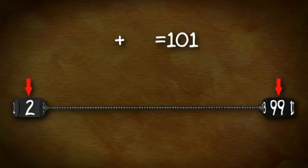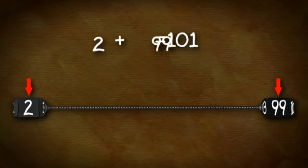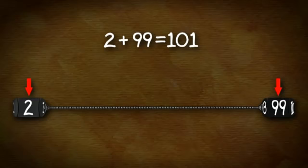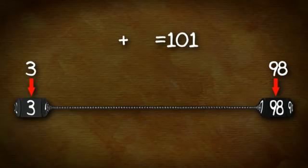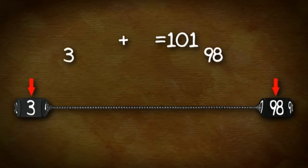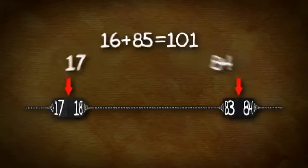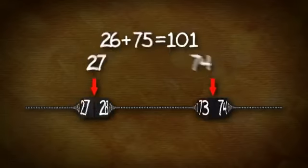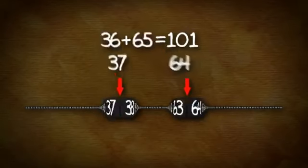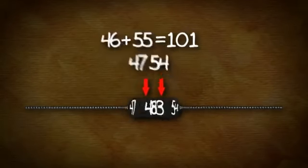If you look one step in from these numbers to 2 and 99 and add them together, you also get 101. Move in another notch to 3 and 98, and they also total 101. This pattern continues throughout the sequence of numbers until we meet at the center with 50 plus 51 equals 101.